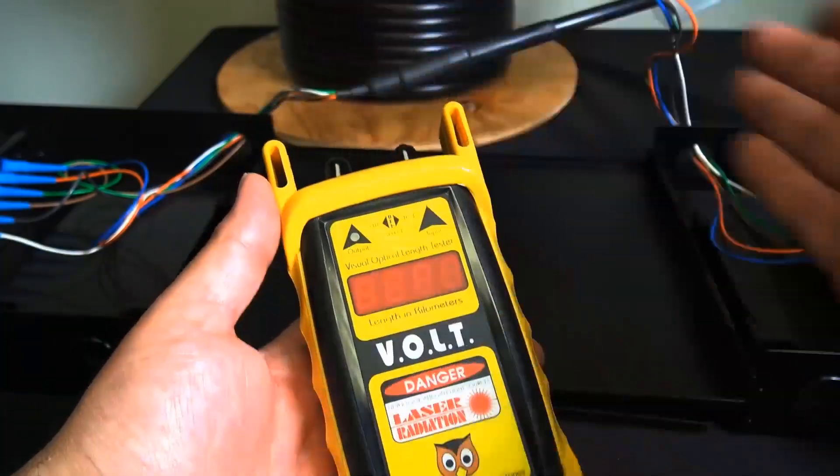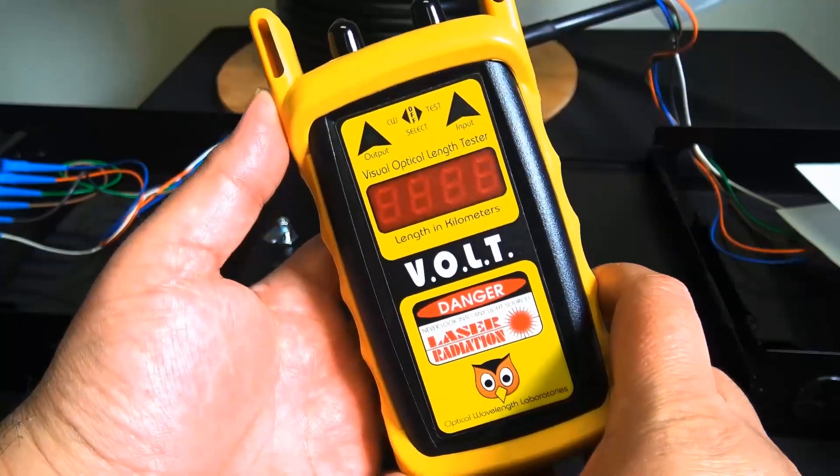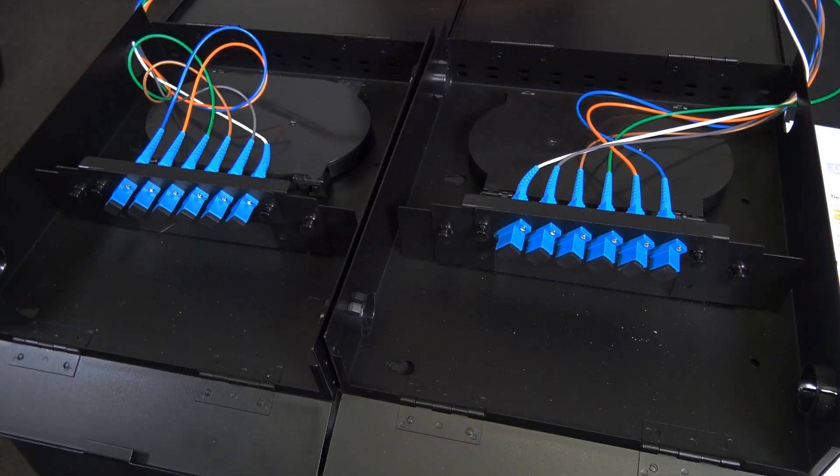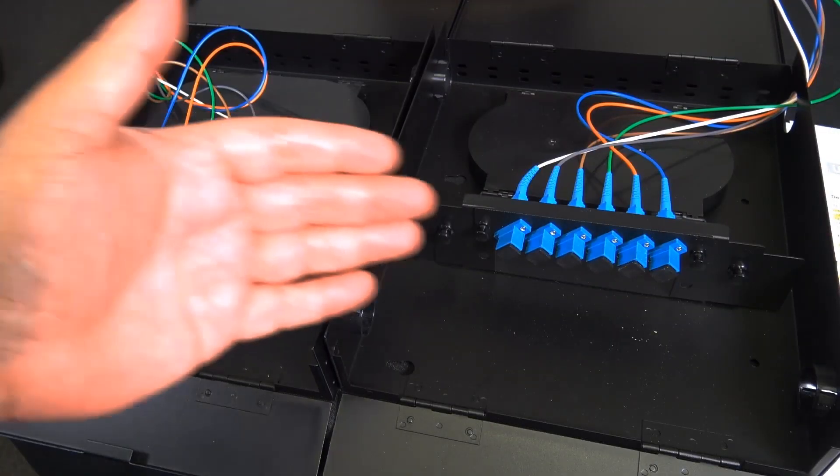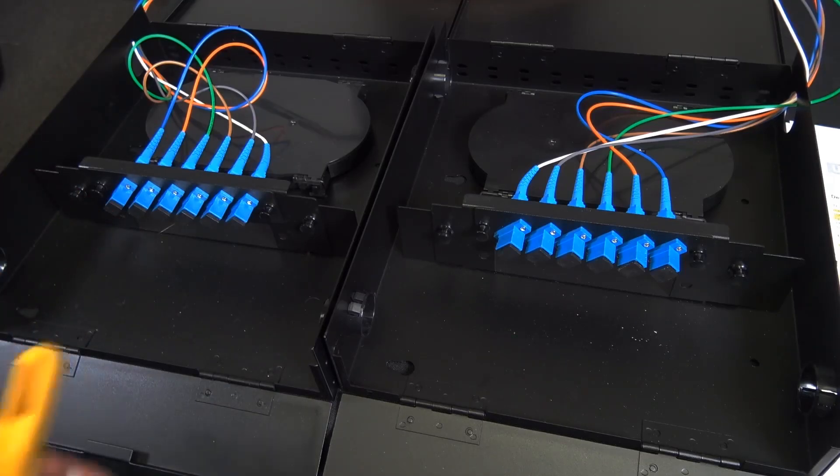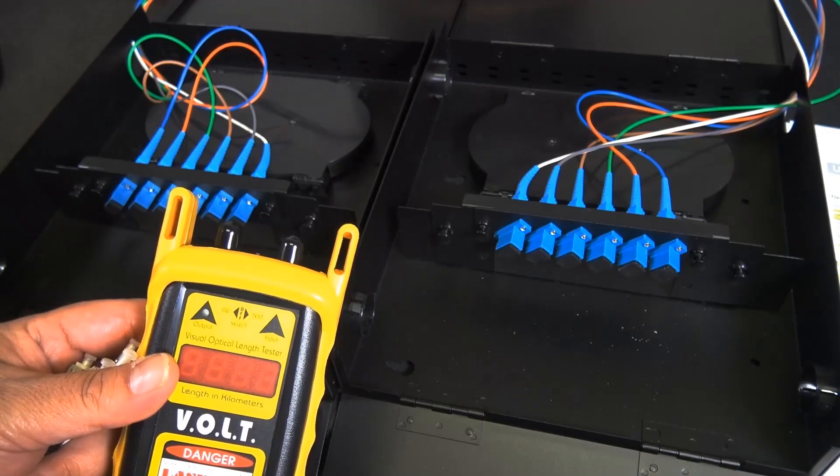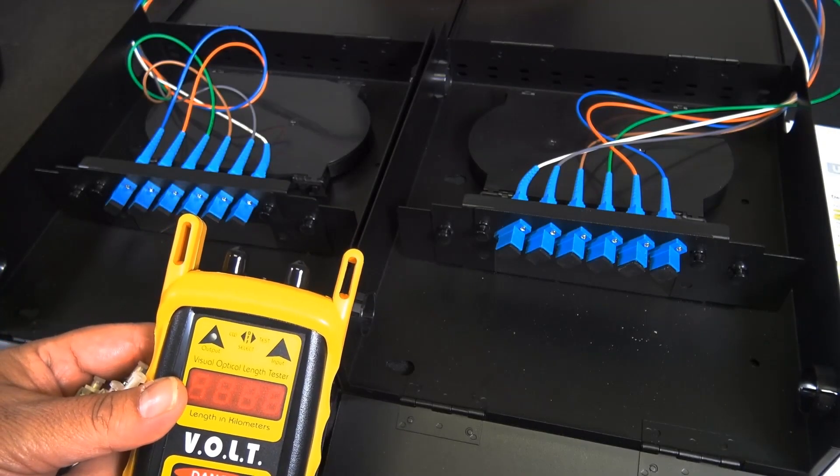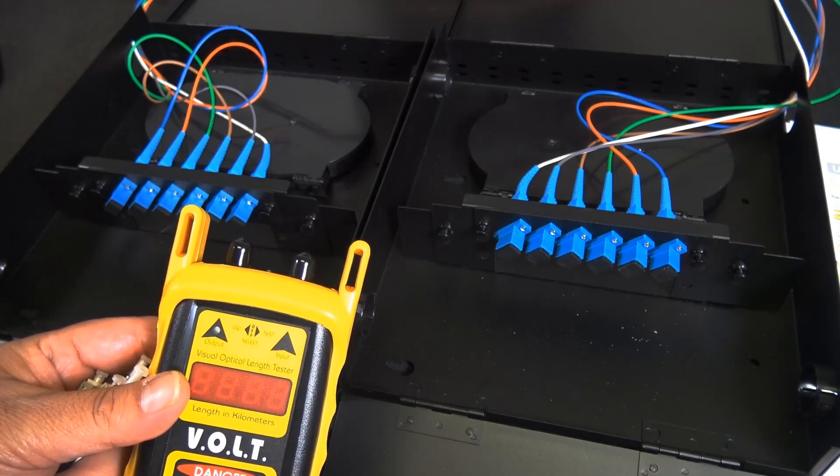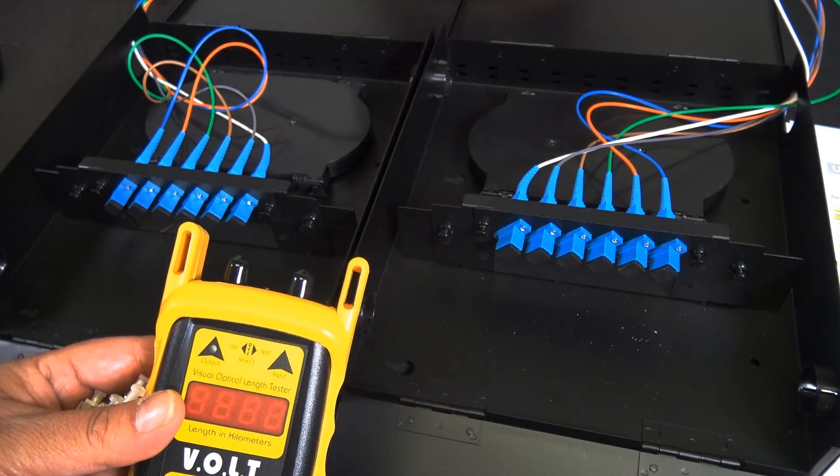Now, I have a little setup right here in front of me. I'm going to show you guys how to set this up. Let's get to it. Okay, so here I have a little setup just as an example so you can visually see it a little better. And what we're going to do with our tester, as I mentioned, this does have a visual red laser in the Volt. Now, that allows it to be used as a visual fiber identifier as well as a visual fault locator.